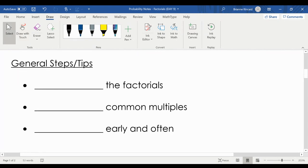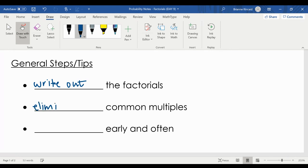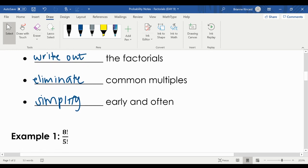So a couple general tips and steps that we do is we are going to write out the factorials every single time. We are going to eliminate the common multiples, and we also want to make sure, you hear me say this a lot, we simplify early and often. If you simplify at the beginning, you're going to work with smaller numbers, and it's going to be less work in the end.